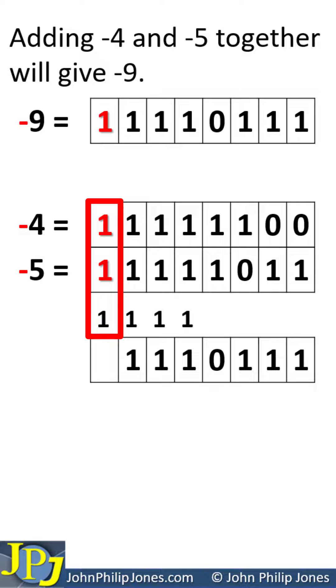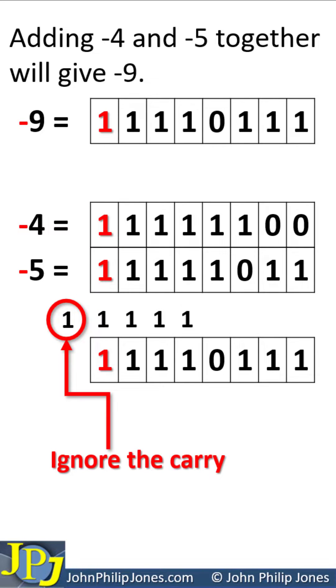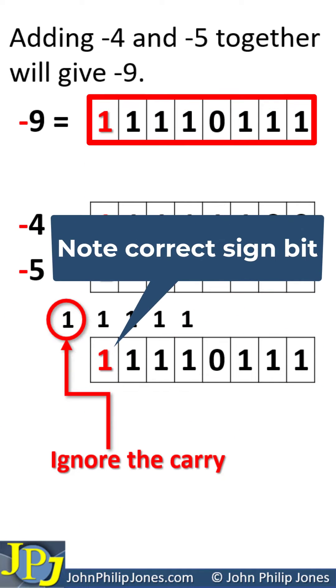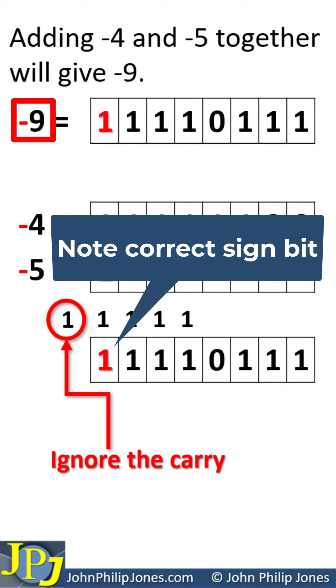We add these up, which is 3, which is 1 down, carry 1. The carry is ignored. This is the same binary pattern, which is the 2's complement representation of minus 9.